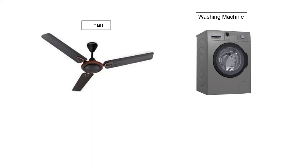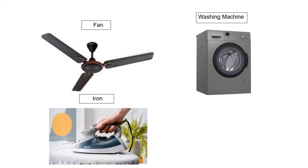This is a washing machine. It is an electrical appliance used for washing clothes automatically. This is an iron. It is an electrical appliance with a flat bottom surface that is heated and used to smooth the clothes.